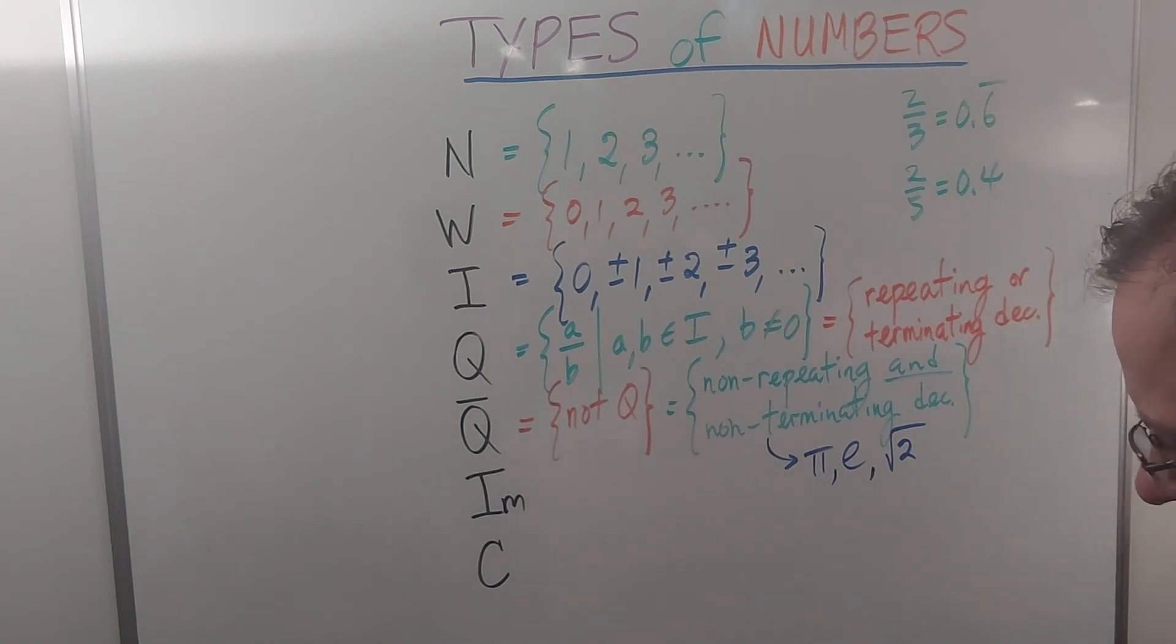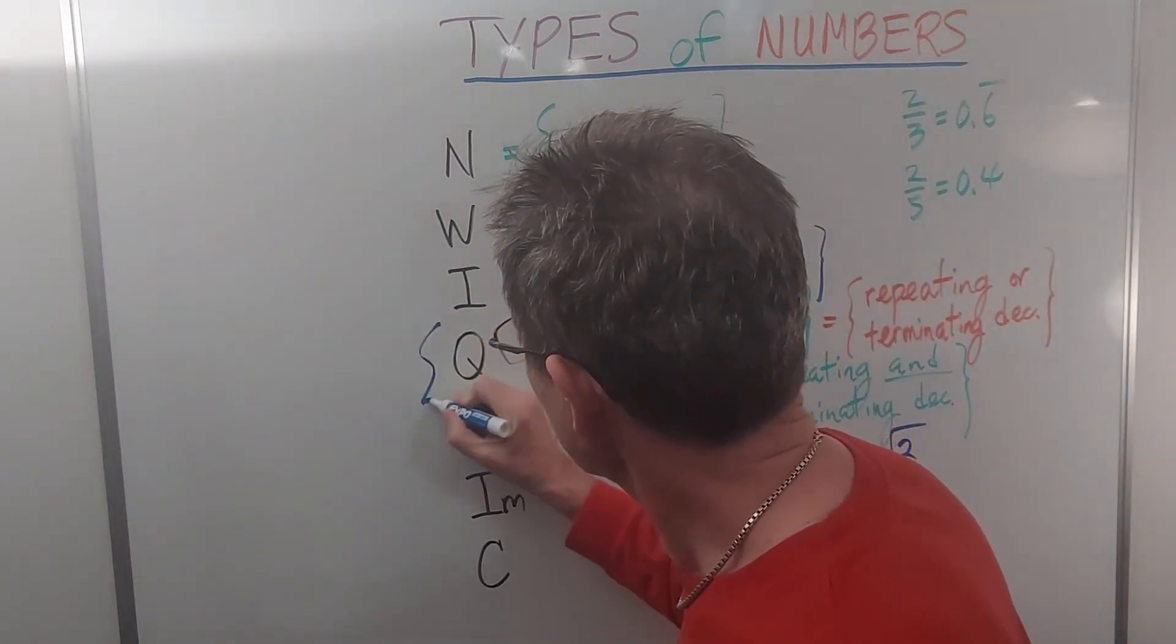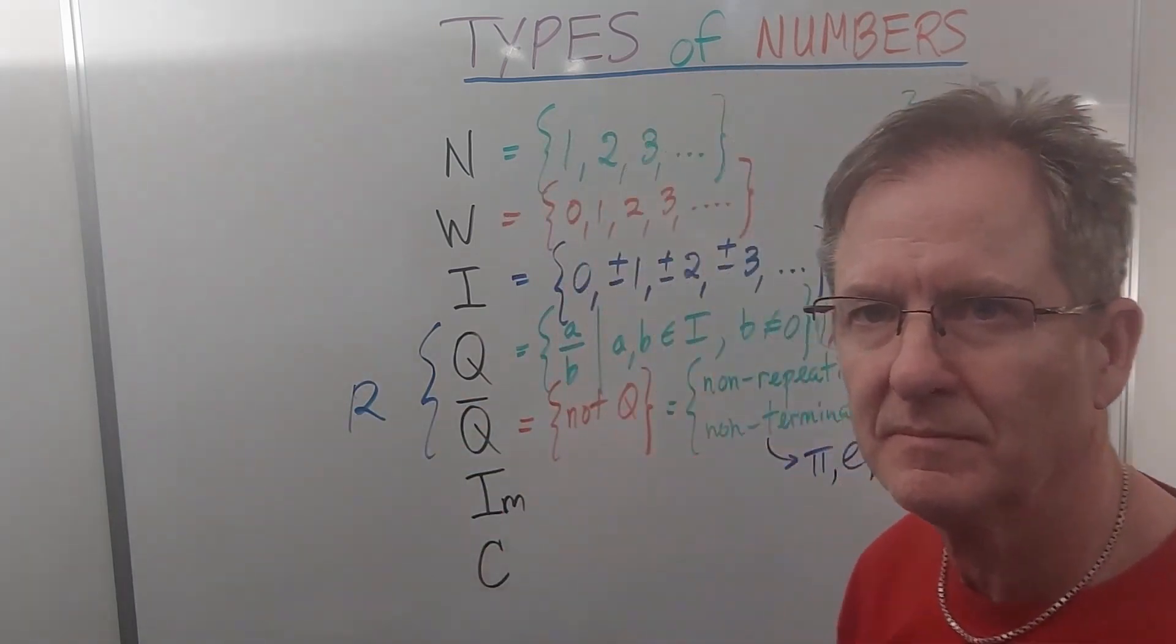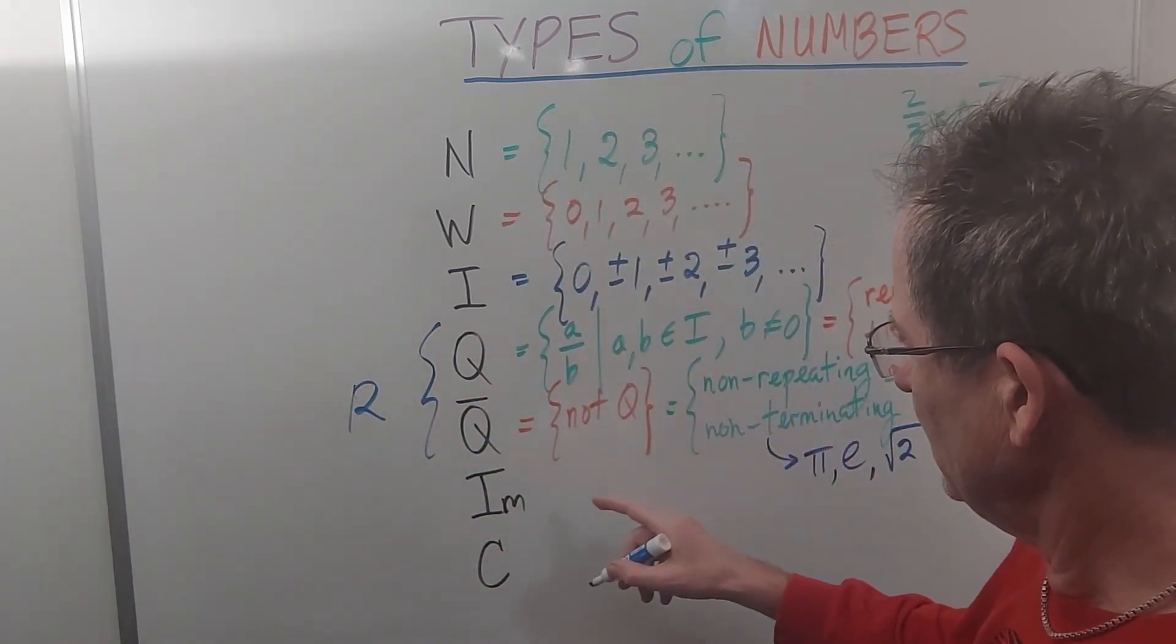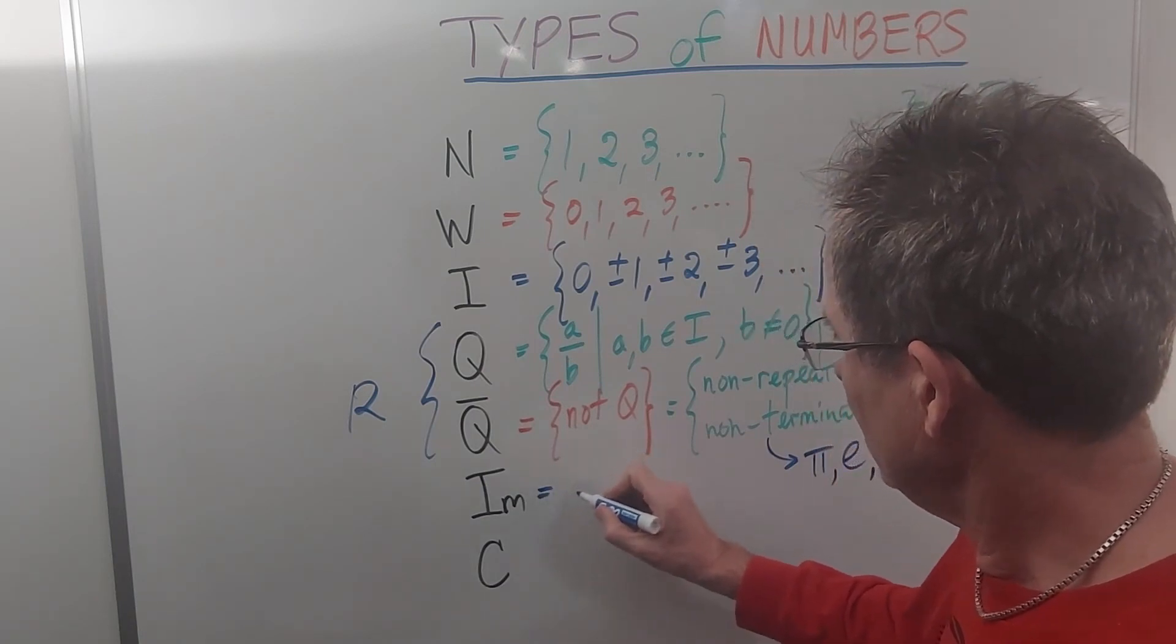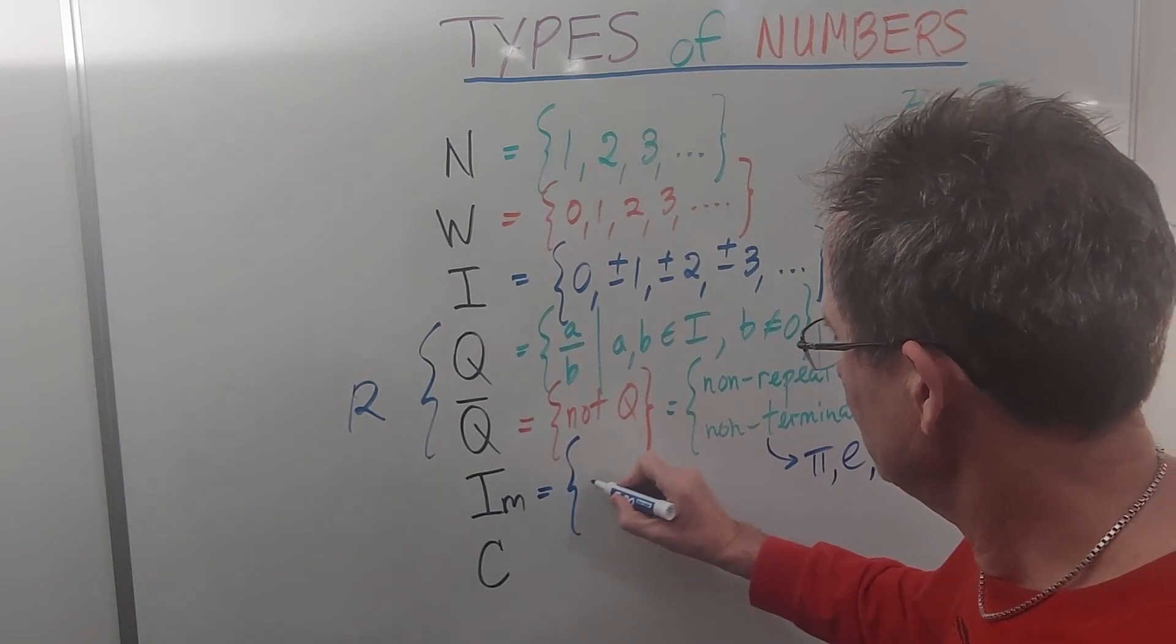And there's the imaginary numbers. But just before I talk about those, let me point out that all together, the rationals and the irrationals are called the real numbers.